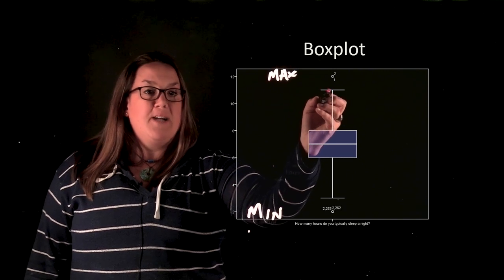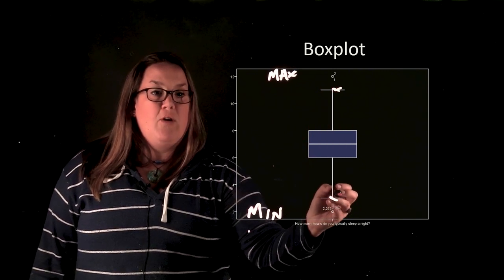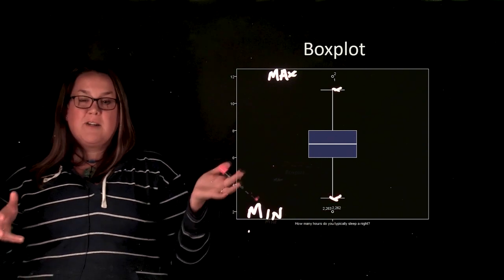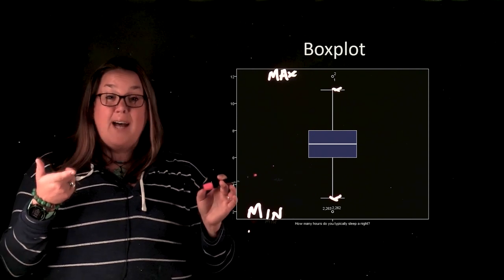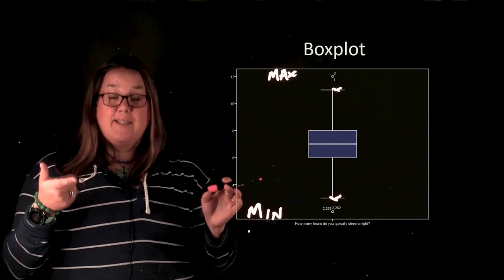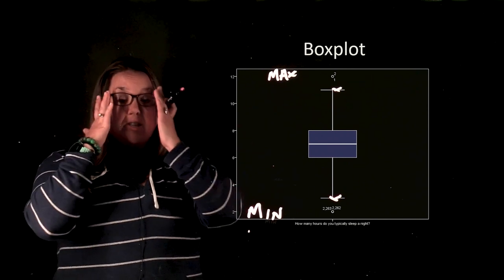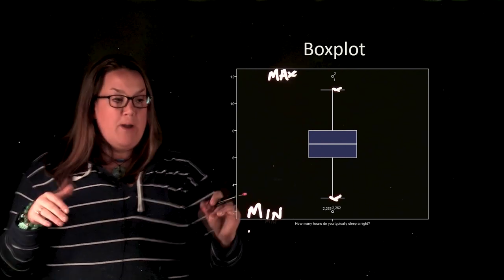Now, these spots here, this end of this whisker and the end of this whisker here, that might be kind of confusing, because you might think that that's the minimum and the maximum. And it's not. Those are kind of weird things. It's kind of a mouthful. That is the last observation in the data set that is not considered an outlier. Not very helpful. It's just that's why the line ends there. Those values or those measurements are not outliers.